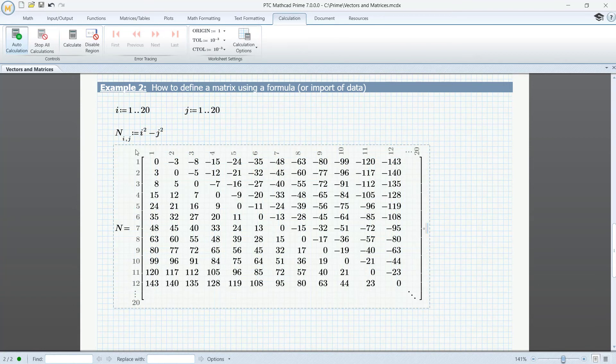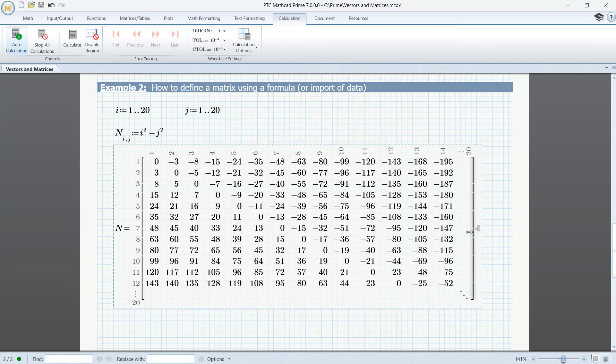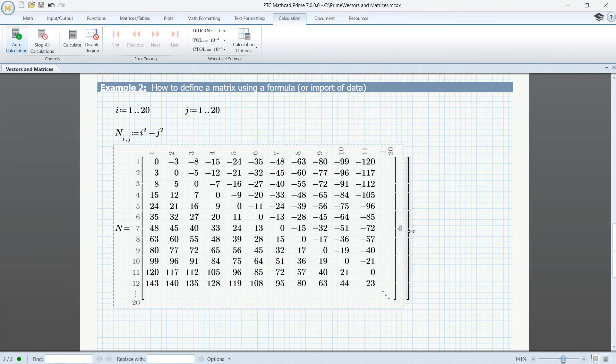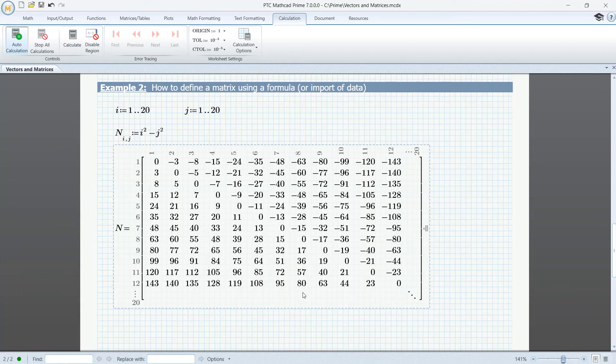M equals... Note that only 12 columns are visible, the same with the rows. If you want more columns, go to the right and drag. And if you want more rows, go to the bottom and drag.